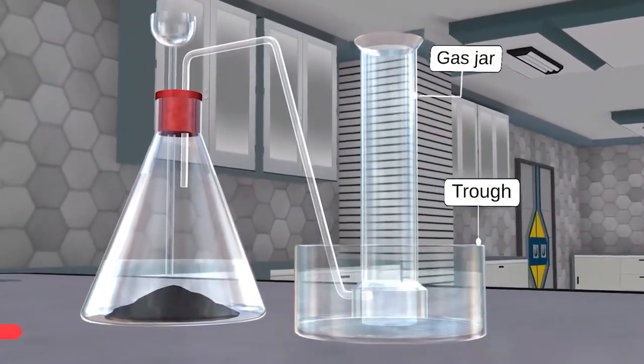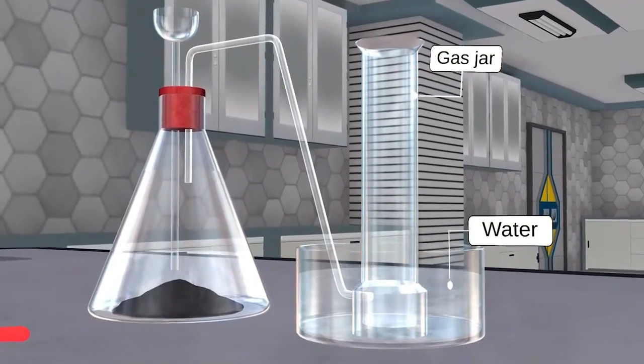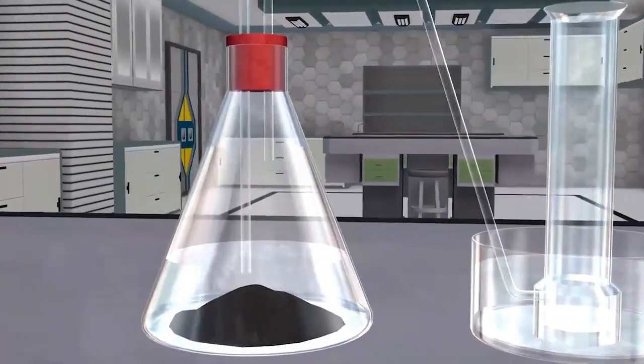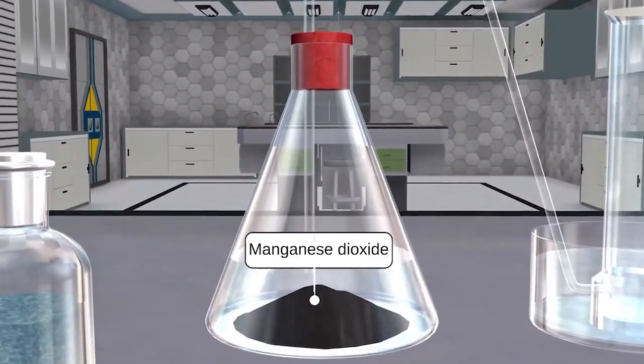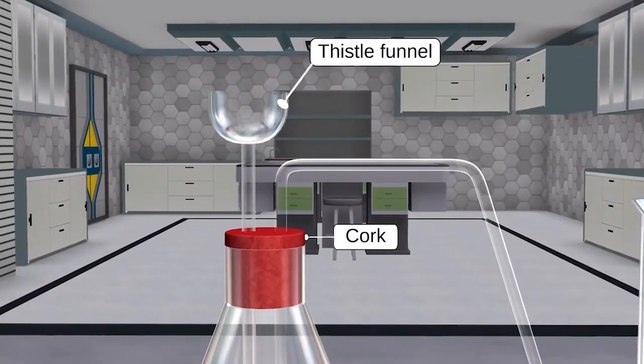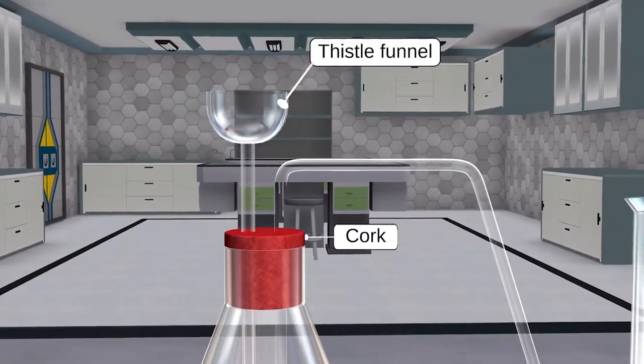A gas collecting apparatus such as a trough, glass jar, water, delivery tube, manganese dioxide, conical flask, a container for mixing the reactants, cork to seal conical flask, airtight thistle funnel, hydrogen peroxide, and dropper.